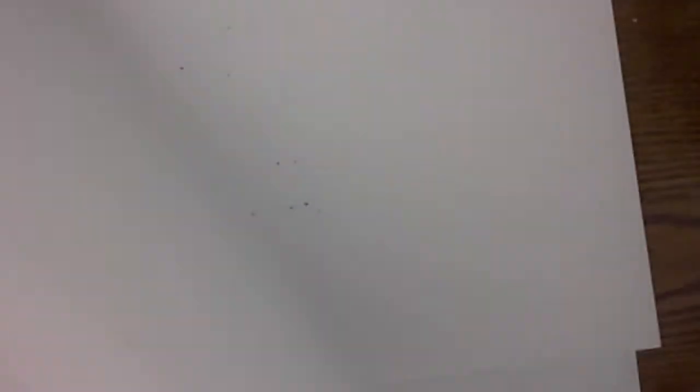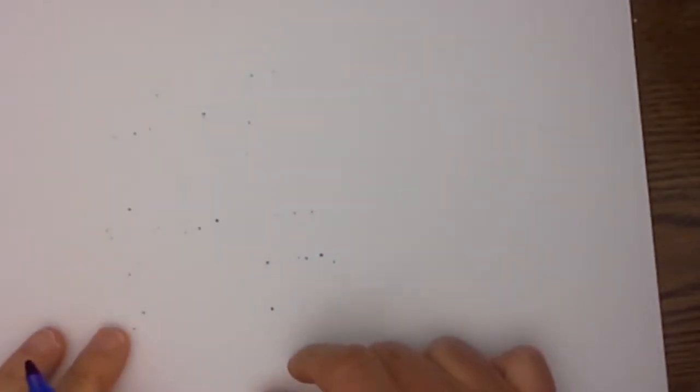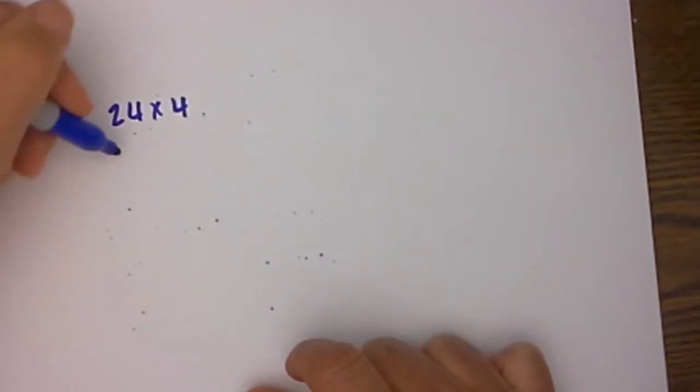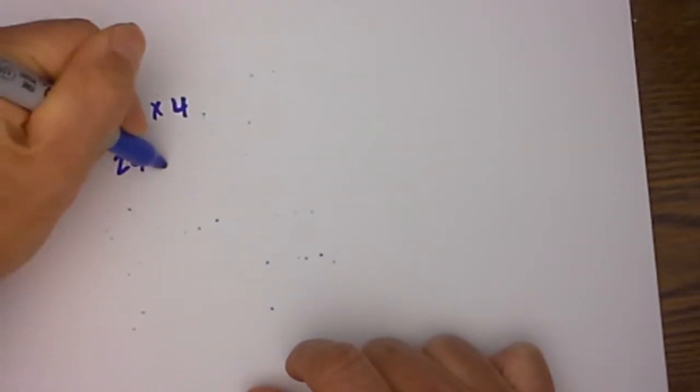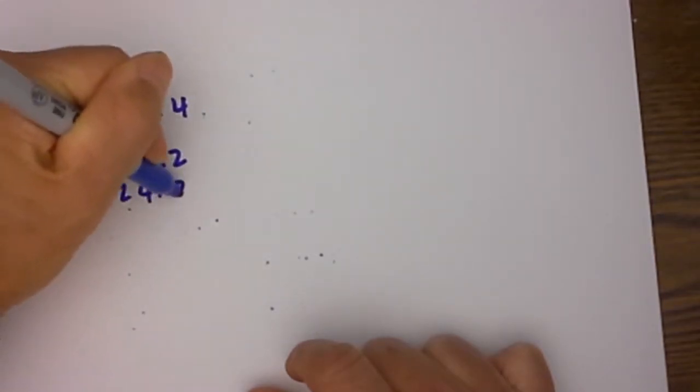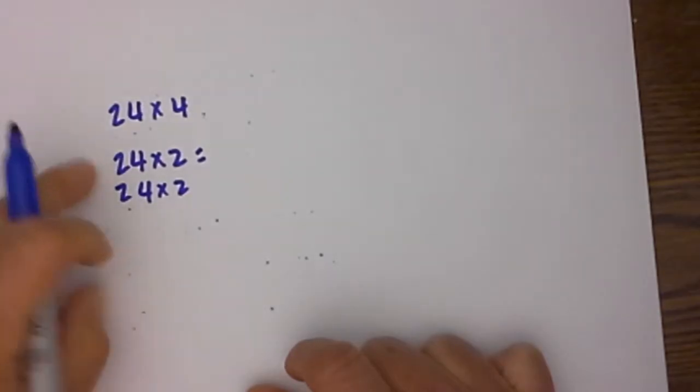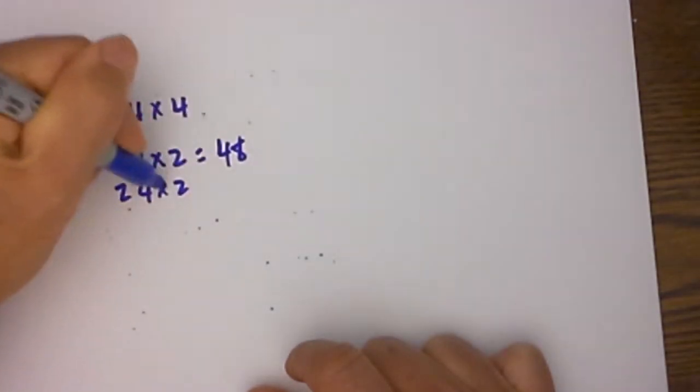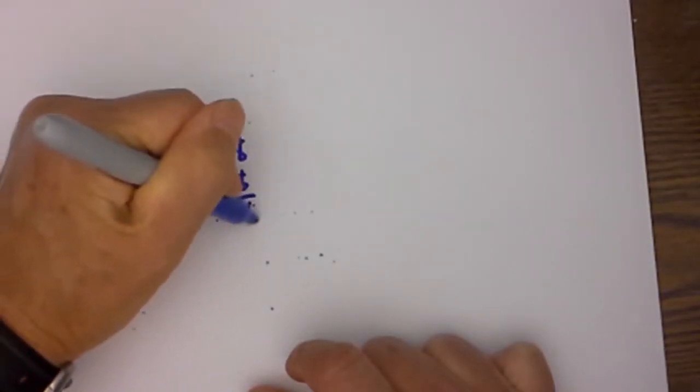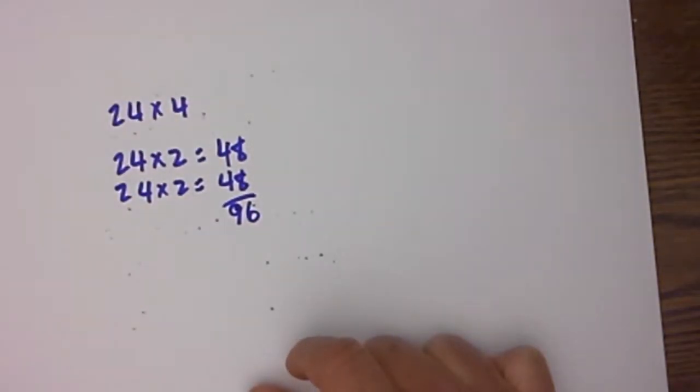Let's go ahead and look at multiplying by 4. This should save you a little bit of time, it's just a little bit different way of thinking about it. Let's say you have 24 times 4. Instead of multiplying that out, I simply take 24 times 2 plus 24 times 2. Well, I know 24 times 2 is 48, which means the one below it will be 48, which becomes 96.